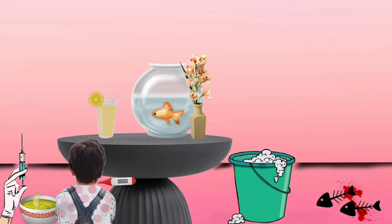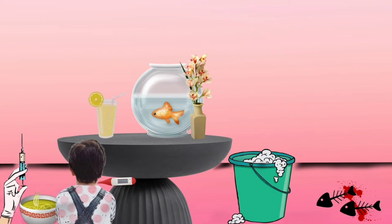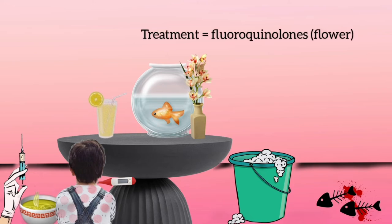You can see fish bones lying on the ground with some blood. This represents that Salmonella is associated with osteomyelitis in sickle cell anemia.